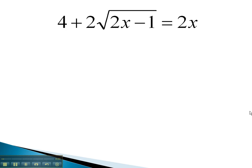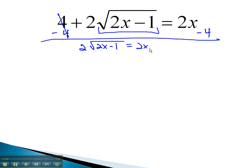So, for example, should we have this problem, we would first need to get the square root part alone by getting rid of the 4 and 2. We cannot add them together, as they are not like terms. The 2 has a square root, the 4 does not. So we will subtract 4 from both sides of the equation. This gives us 2 times the square root of 2x minus 1 equals 2x minus 4.